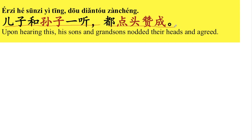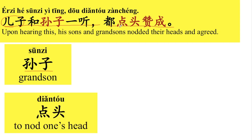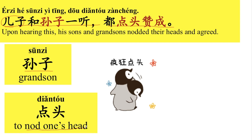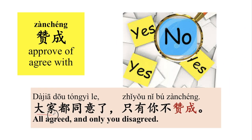儿子和孙子一听，都点头赞成。儿子 means son. 孙子 means grandson. 点头 means to nod one's head. 赞成 means agree with. For example, 大家都同意了，只有你不赞成。All agreed and only you disagreed. 都点头赞成。